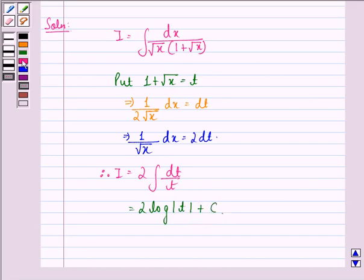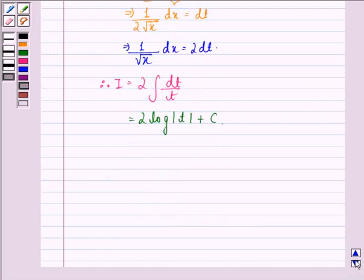Therefore integral I becomes 2 into integral dt divided by t that is further equal to 2 log mod t plus a constant c.